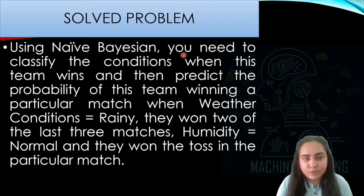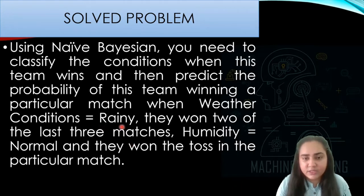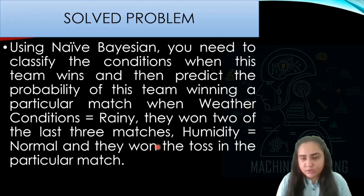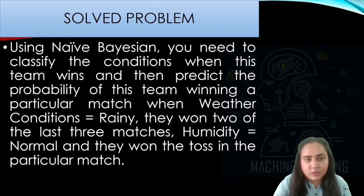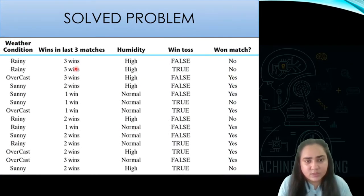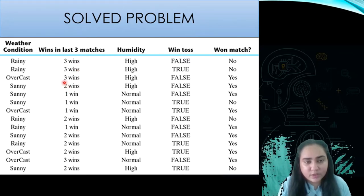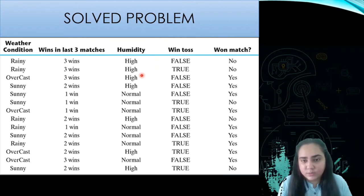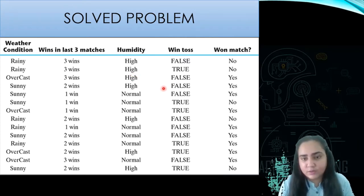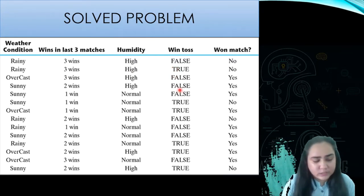Using the Naive Bayes classifier, we need to classify the conditions and find out whether the team is going to win or lose the match based on the given data. We are told it is rainy, the humidity is normal, the team has won two of the last three matches, and they won the coin toss. The dataset contains about 14 rows with columns for weather, wins in last three matches, humidity (high/normal), coin toss (true/false), and match outcome (yes/no).